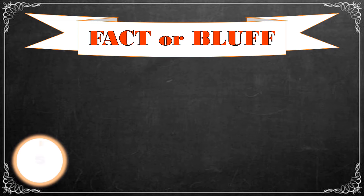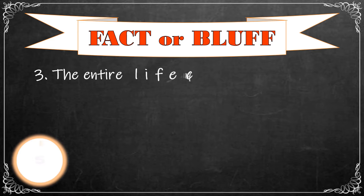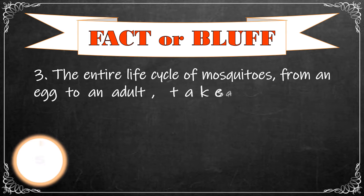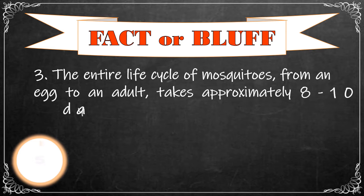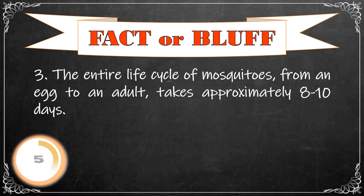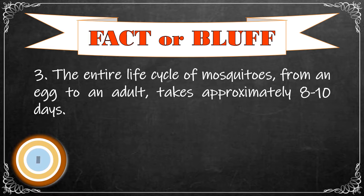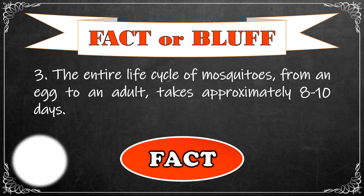Number 3: The entire life cycle of mosquitoes from an egg to an adult takes approximately 8 to 10 days. The correct answer is fact!